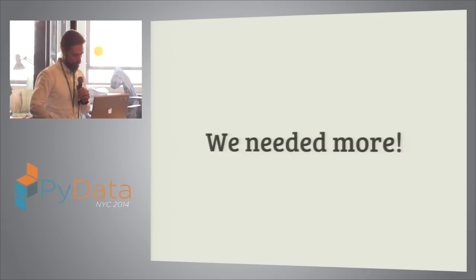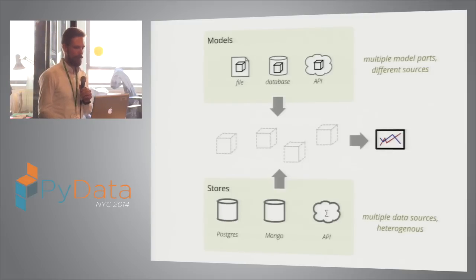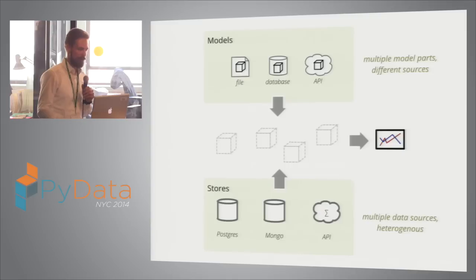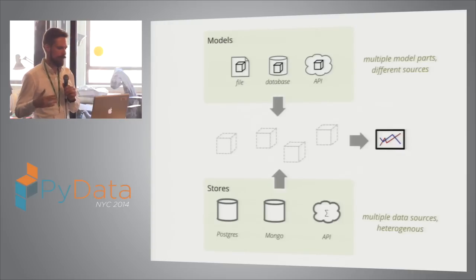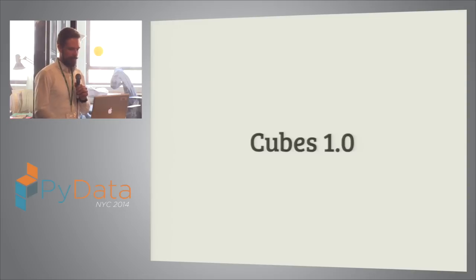Cubes was redesigned because you might have a model written in a file stored somewhere, or the model can be stored in a database, or there are already services that have this concept of Cubes — so why not use them? Why not just read their metadata and translate it to our view of the Cubes model? You might have different databases, you might even get the data from an API and present it to users so they don't need to know where the data comes from. And the data are already expected to be formatted in a certain usable way. So here comes Cubes 1.0.